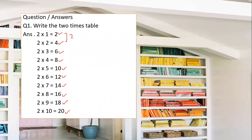Four minus two is two. Six minus four is again two. Just see the difference — eight minus six is again two, ten minus eight is again two. So it means this is the table of two, and each number will have a difference of two.